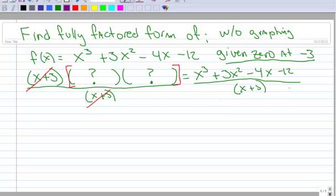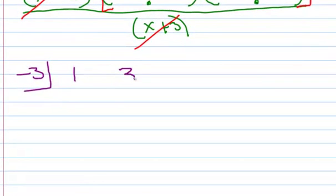So x plus 3, I set that equal to 0 and I get negative 3. So there's my negative 3. I'm going to use synthetic division. You could use long. Coefficient 1, 3, negative 4, and negative 12.